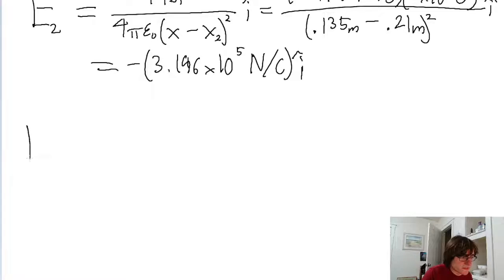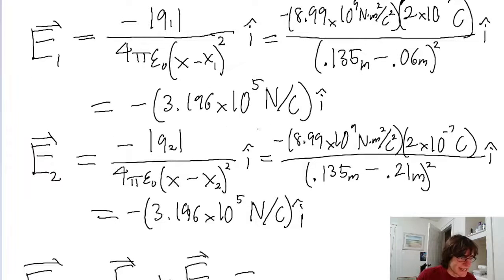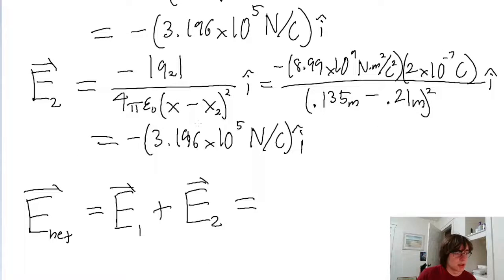And so to find the net electric field, all we have to do is sum up these two components. The net electric field is equal to the first vector, the electric field from particle 1, plus the electric field vector from particle 2. So that means it's just negative 3.196 times 10 to the power of 5, plus negative 3.196 times 10 to the power of 5 again.